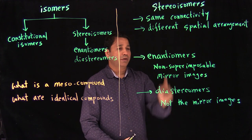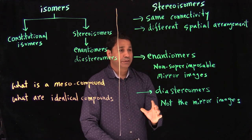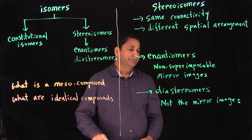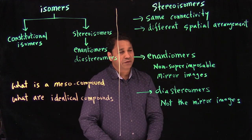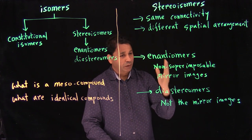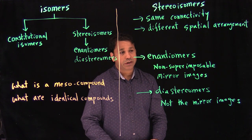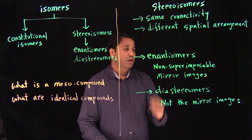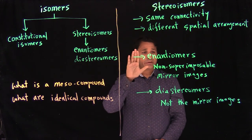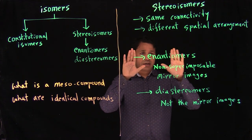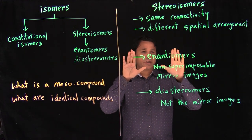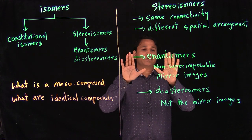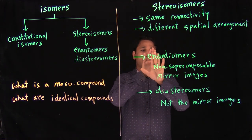We'll look at the general definitions of enantiomers and diastereomers, then do examples. Enantiomers are non-superimposable mirror images of each other. If you have two structures and put a mirror between them and they look like mirror images, those are enantiomers. For example, my two hands are enantiomers — one is a mirror image of the other, but if you try to put them on top of each other, they don't superimpose. They don't fit perfectly.